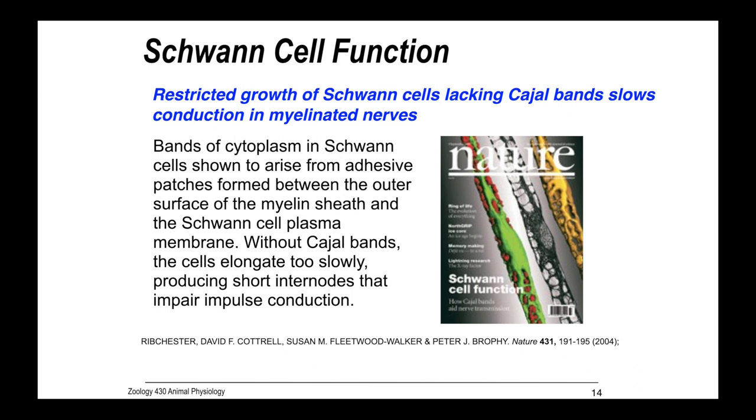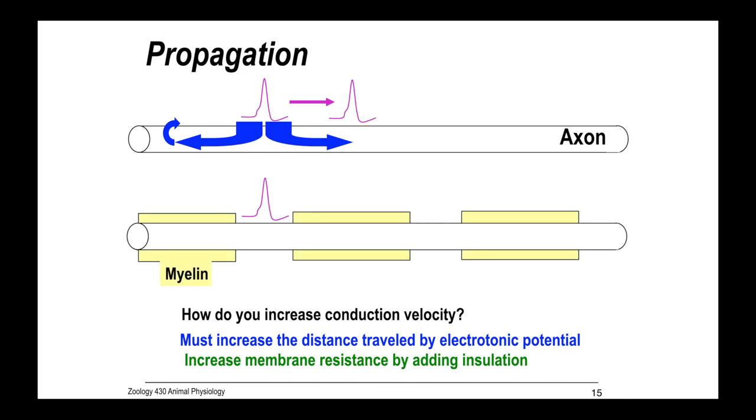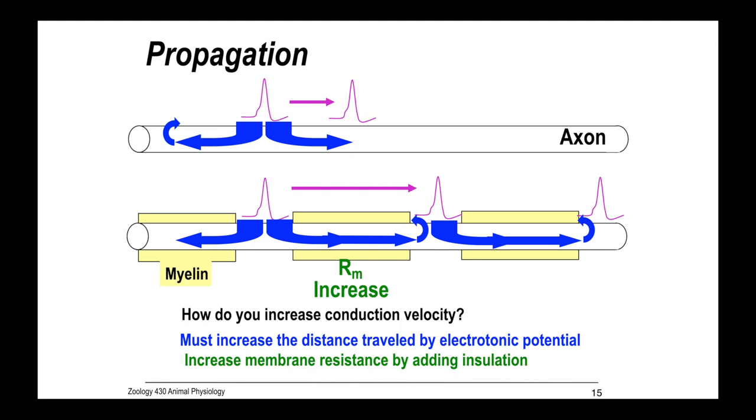On the cover here, Cajal's drawing of a silver stain myelinated nerve fiber is flanked by modern reconstructions, showing how the bands act as nutrient transport channels on the right, and how adhesive patches of red segregate the cytoplasm into Cajal bands green. So isn't this super cool?